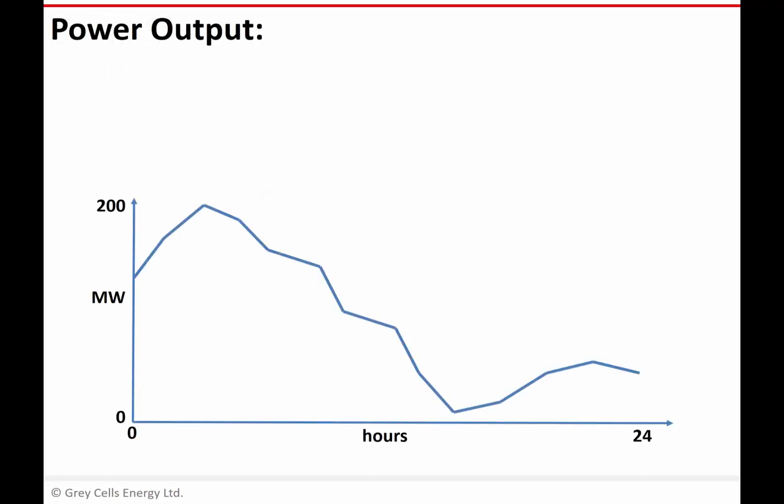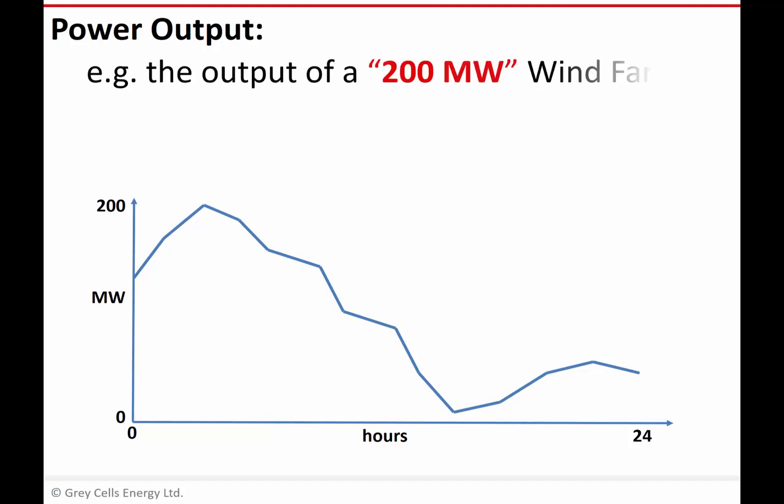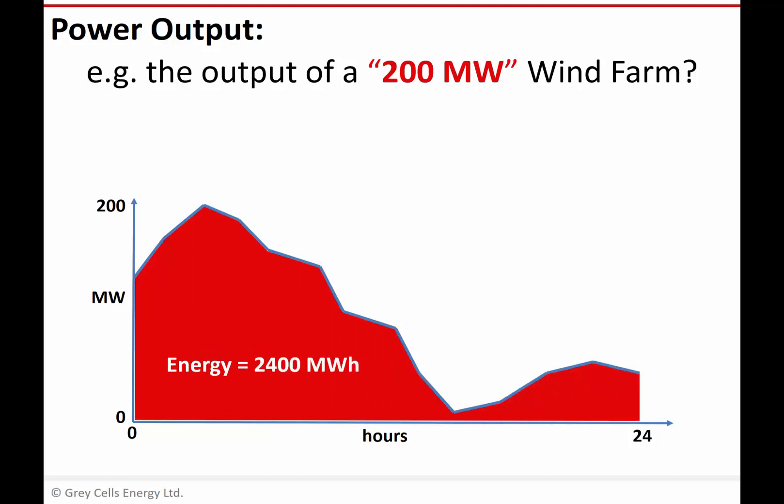We saw previously that the power output of a power plant — let's take a 200 megawatt wind farm as a hypothetical example — can vary on a continuous basis. As shown on the chart, we've got a 200 megawatt wind farm whose output is varying over the course of 24 hours from anywhere close to zero up to 200 megawatts. You can calculate the amount of energy generated by that wind farm graphically as the area under the power-against-time curve — megawatts multiplied by hours gives megawatt hours — which in this case comes out at 2400 megawatt hours.